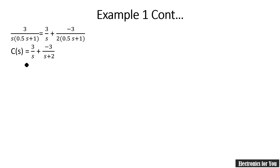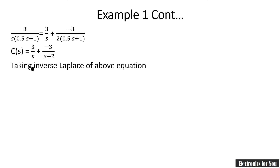Substituting A = 3 and B = −3/2 back, and simplifying the denominator to (s + 2), we take the inverse Laplace transform. The inverse Laplace of 3/s is 3, and for the second term we get −3e^(−2t). So c(t) = 3 − 3e^(−2t).